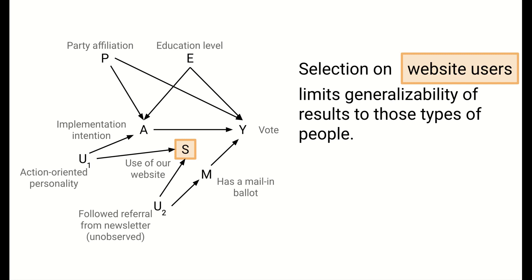It's worth making a quick note about the generalizability of findings. Because our data come from users of our website, our results really only generalize to those types of people. More generally, whenever there are selection nodes in our causal graphs, those selection variables and causes of those selection variables determine the population to which our results generalize. Trying to generalize results to populations different from the study population is a very difficult problem and an active area of research in the causal inference community.